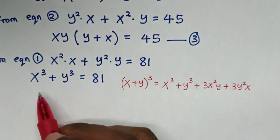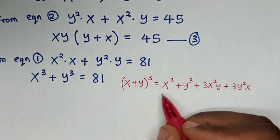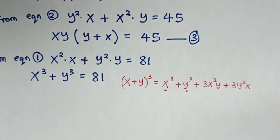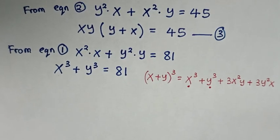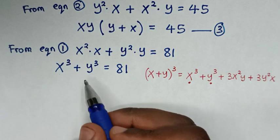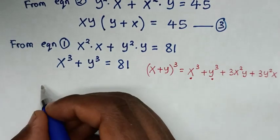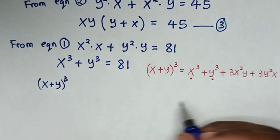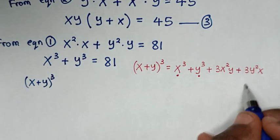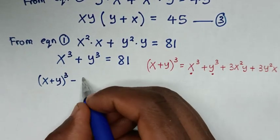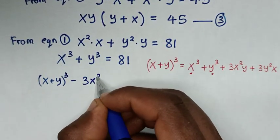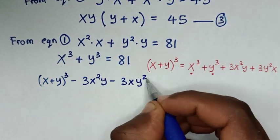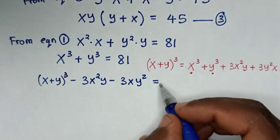Now in here we have x³ plus y³, which is this. We take it into this side. So x³ plus y³ becomes (x + y)³. When we rearrange, it will be minus 3x²y minus 3xy² is equal to 81.